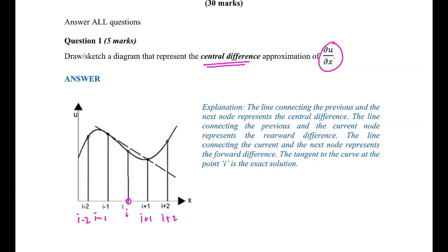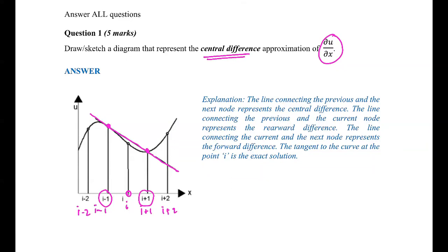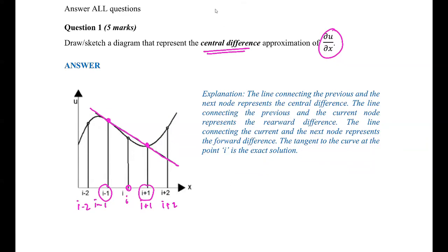For the central difference, it takes the point on the left side and the right side, covering I minus 1 and I plus 1. So the slope or the line that represents the answer will span those two points. If you gave a sketch like this, you should be getting full marks for your answer.